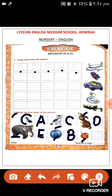This is an apple. What is this? This is an apple. A for apple. So we will write here A. A for apple. Okay children.